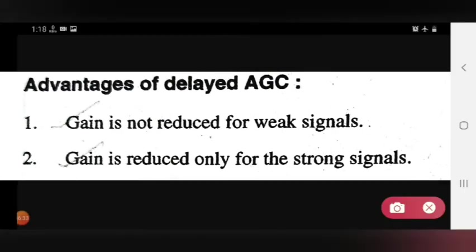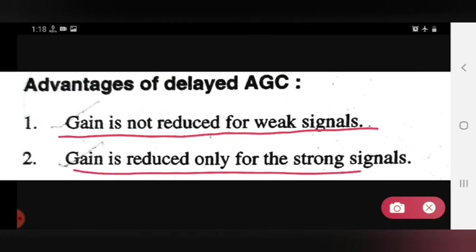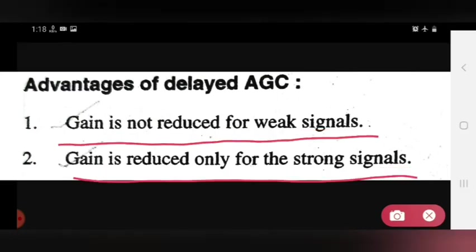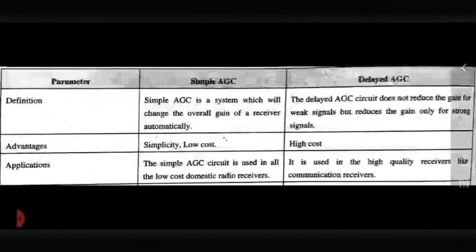Advantages of delayed AGC: First, gain is not reduced for the weak signal. Second, gain is reduced only for the strong signal.